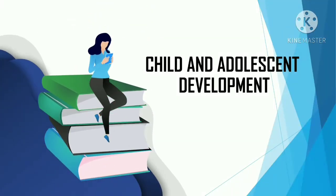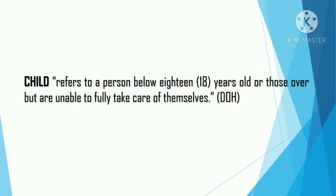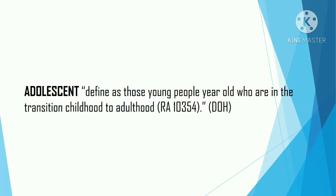Child and Adolescent Development. A child refers to a person below 18 years old, or those who are unable to fully take care of themselves. An adolescent is defined as a young person who is in the transition from childhood to adulthood.